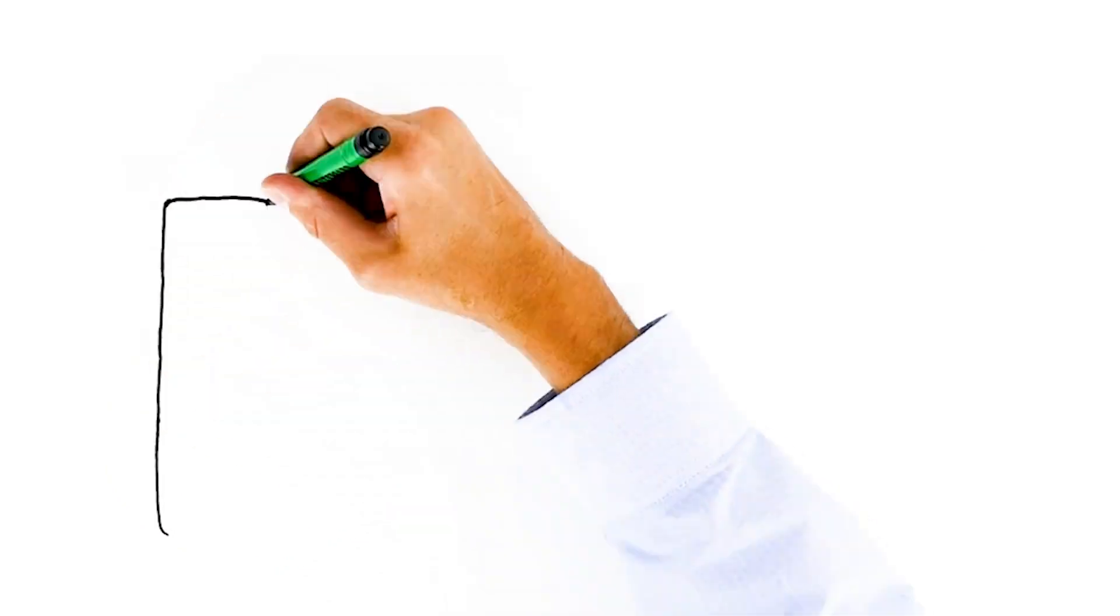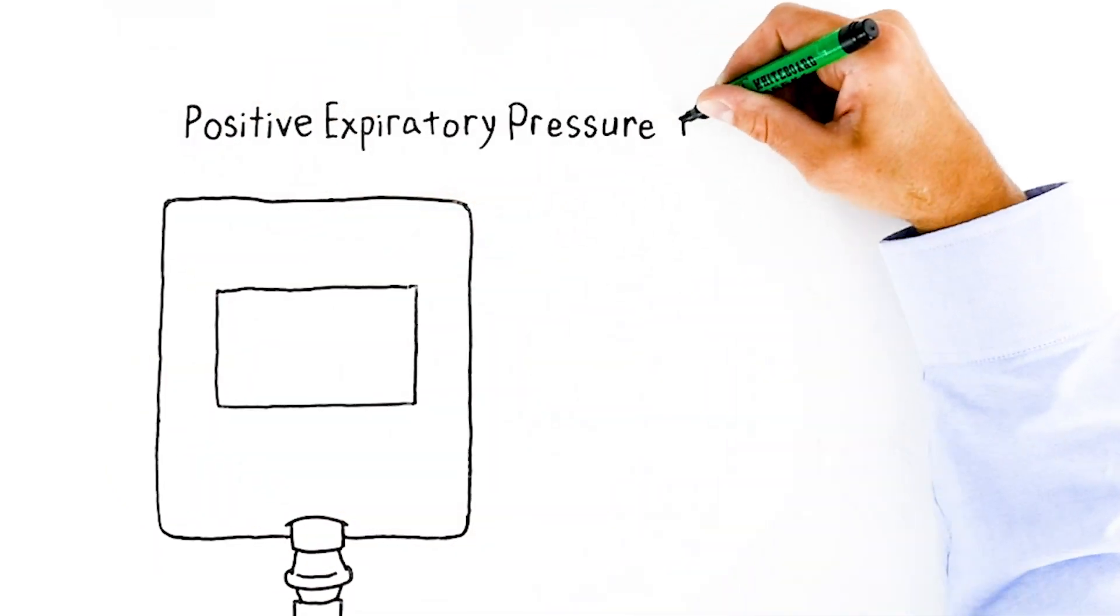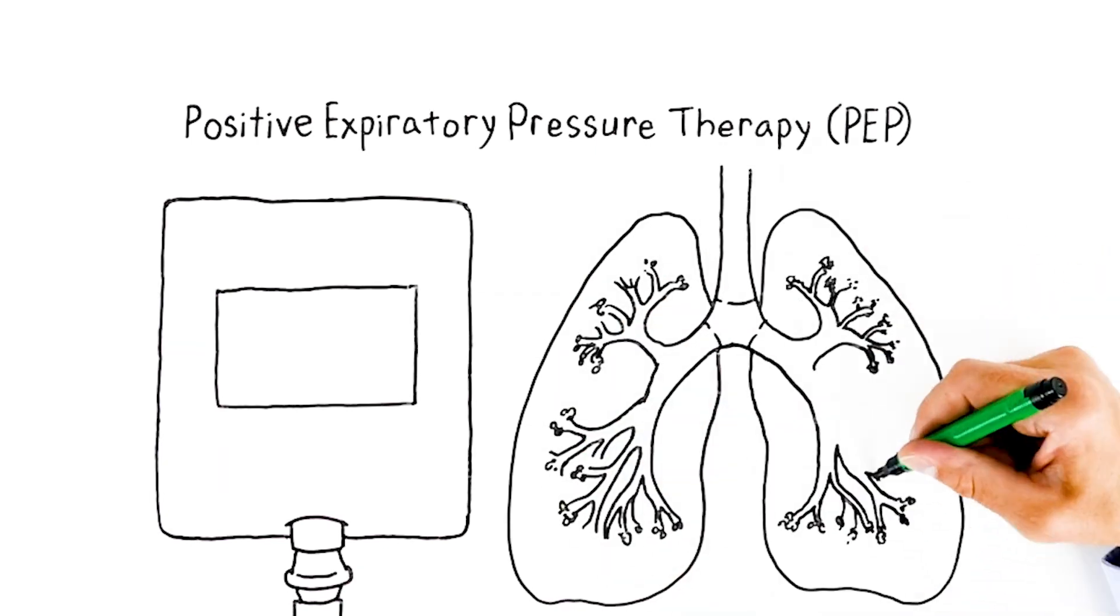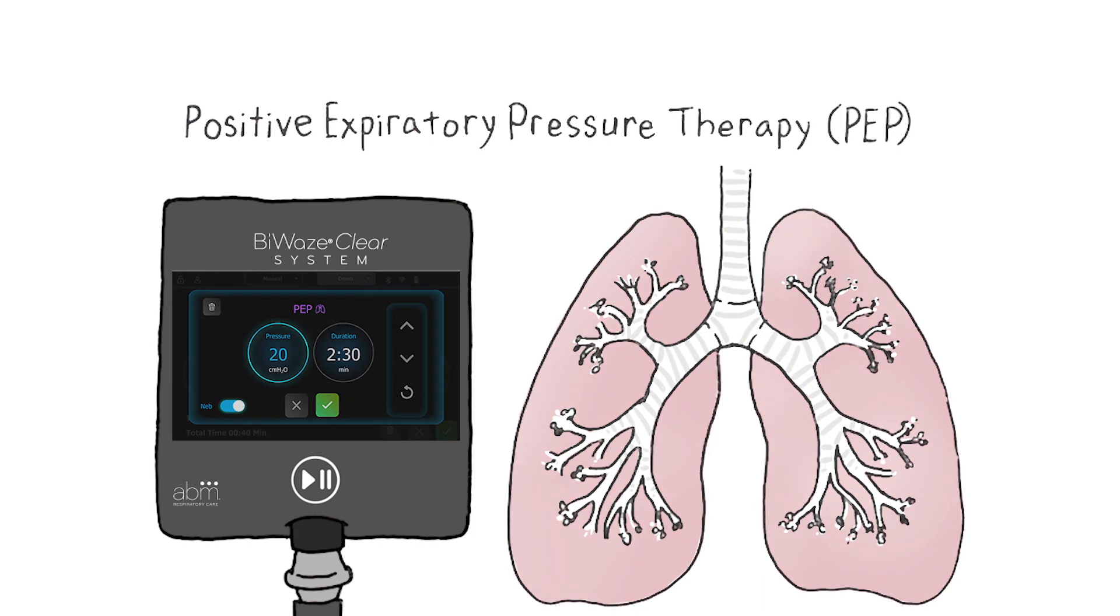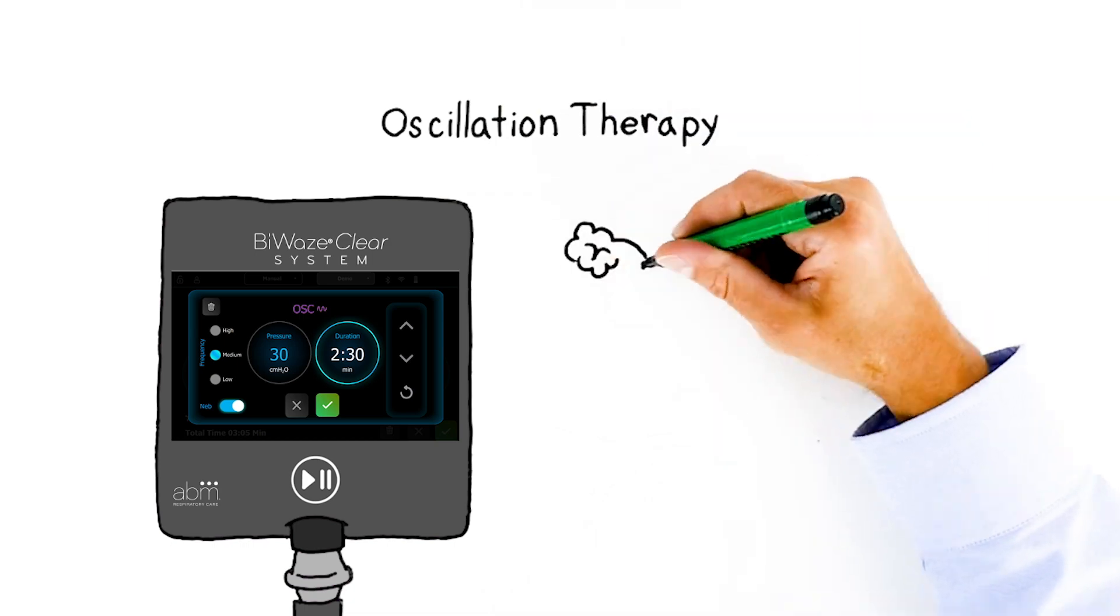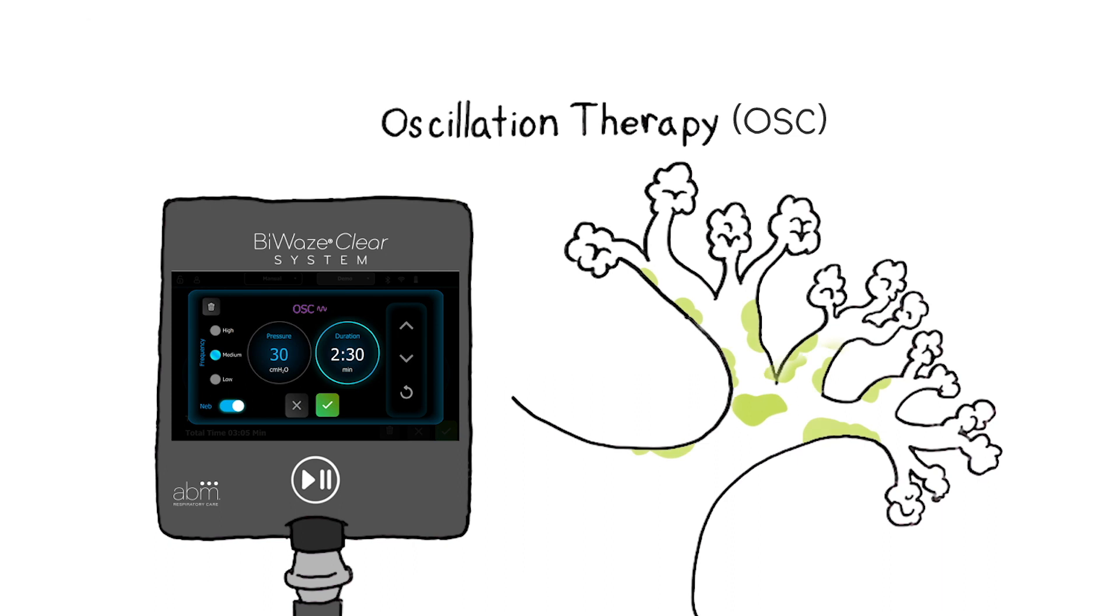Let's look at how Byways Clear provides these therapies. The PEP, or Positive Expiratory Pressure Therapy, expands airways and holds them open. The air also gets behind mucus blockages and moves it up to the upper airways. Alternating with PEP is OS, or oscillation therapy, that helps loosen and thin mucus during both inhalation and exhalation. This reduces blockage size and assists cilia to move mucus to the upper airways.